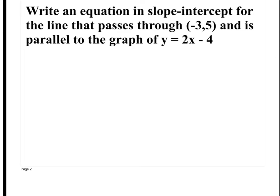We're going to write an equation in slope-intercept form for the line that passes through this point and is parallel to this graph. It's got to be in slope-intercept form, which is y equals mx plus b. What I need to know first is my slope of my new line.